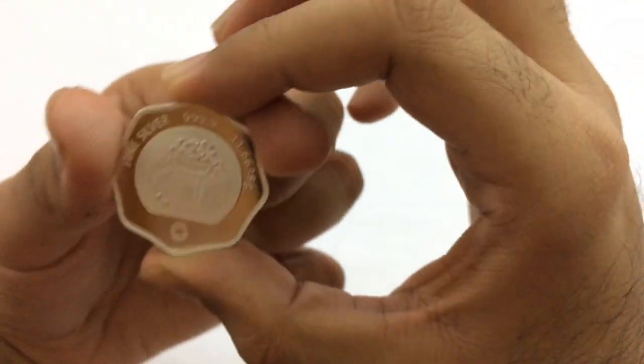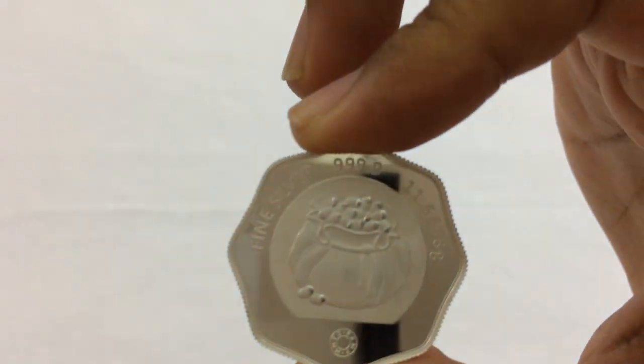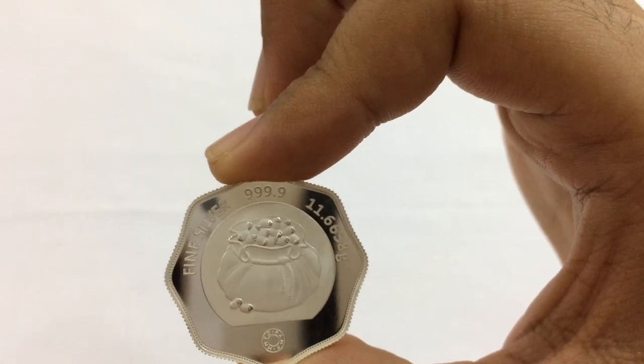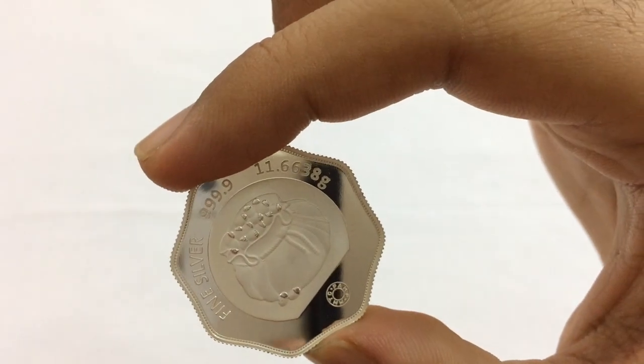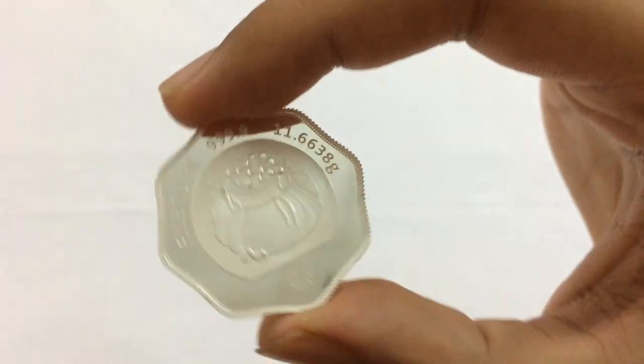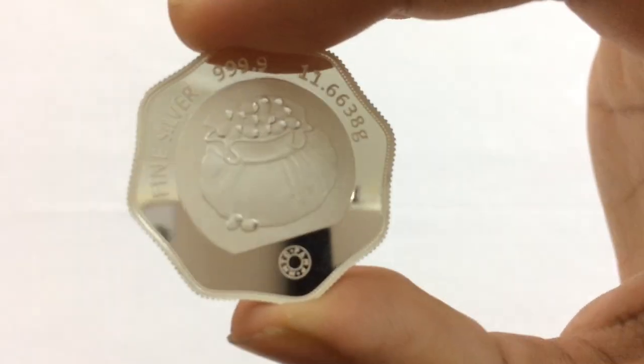And the reverse—to the left it says fine silver followed by triple 9.9, the purest form of silver. The weight is 11.6638 grams, and on the bottom is the MMTC PAMP logo.